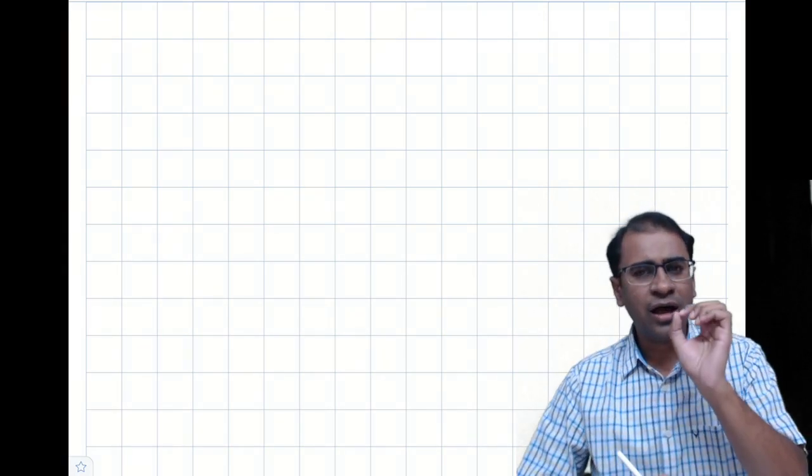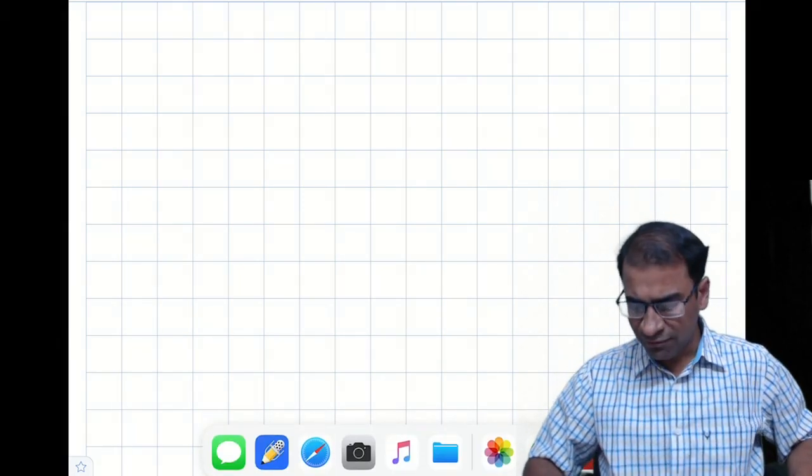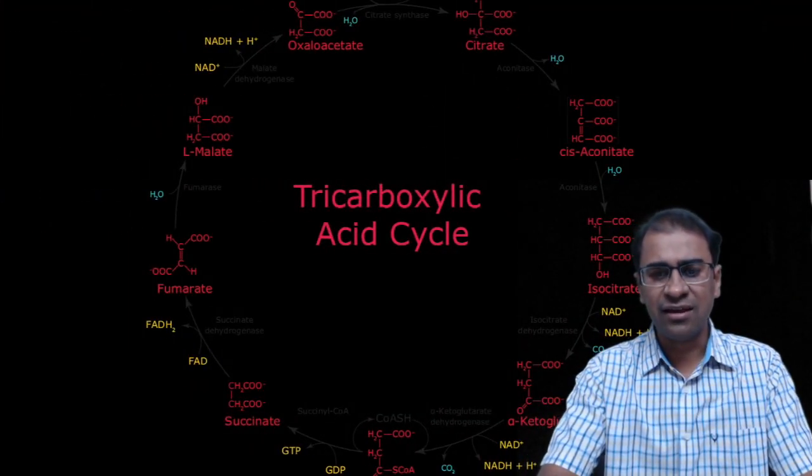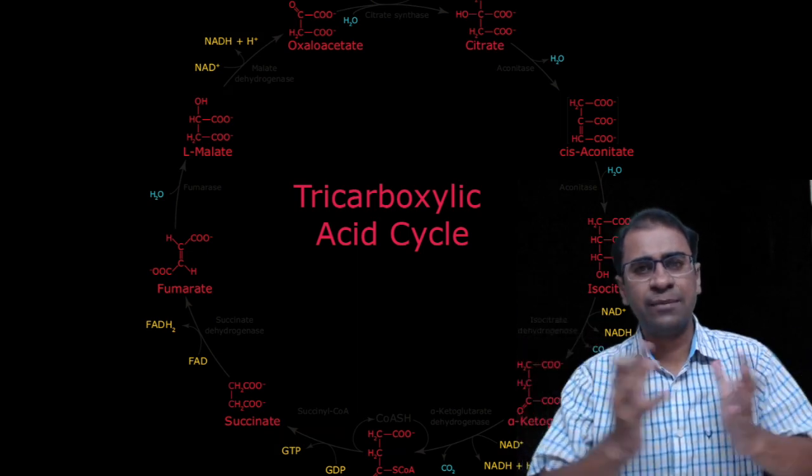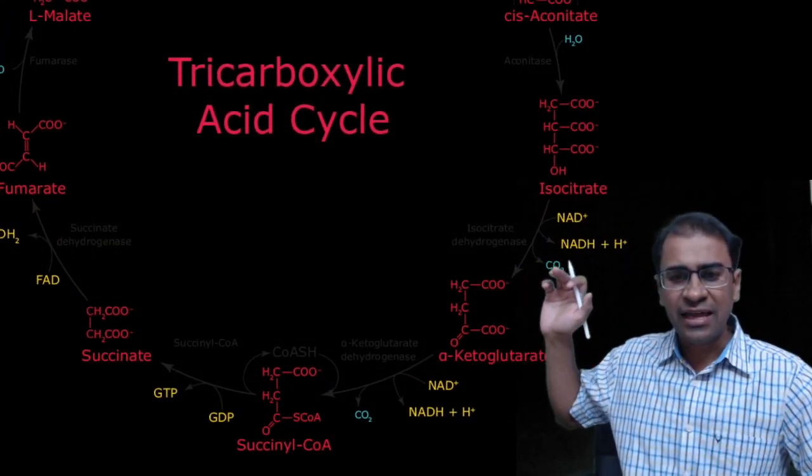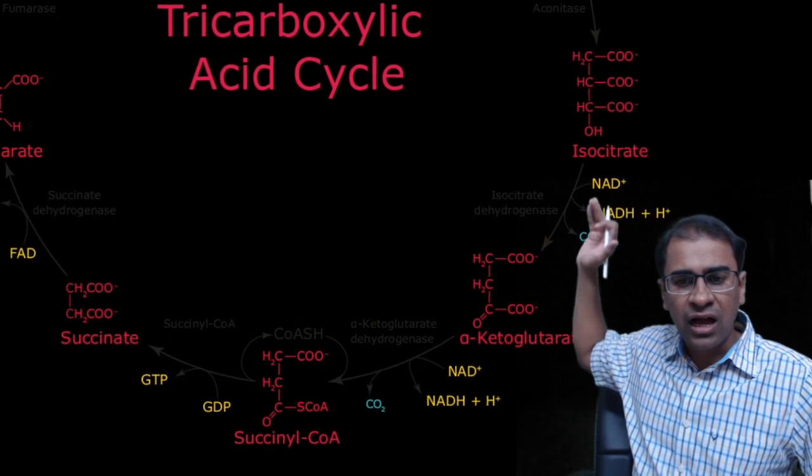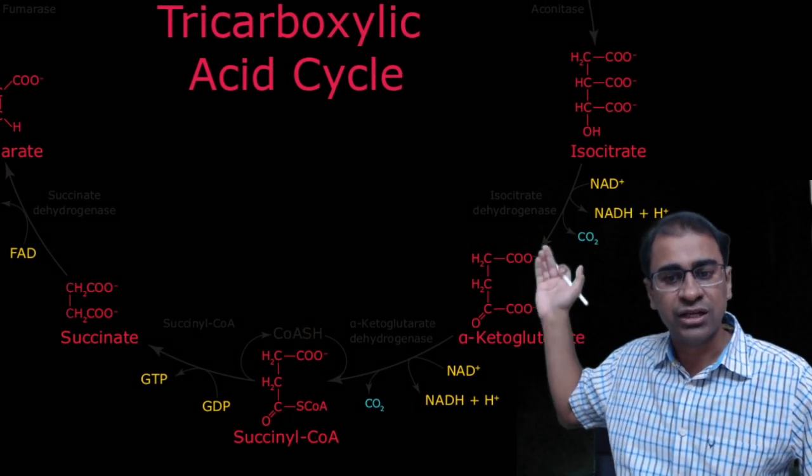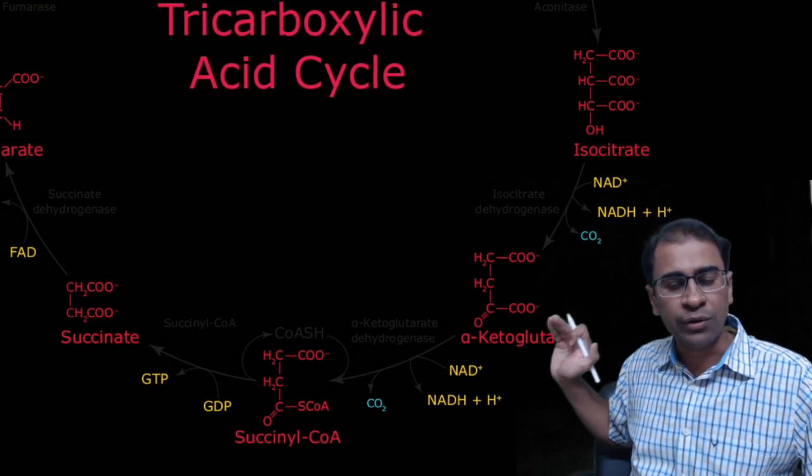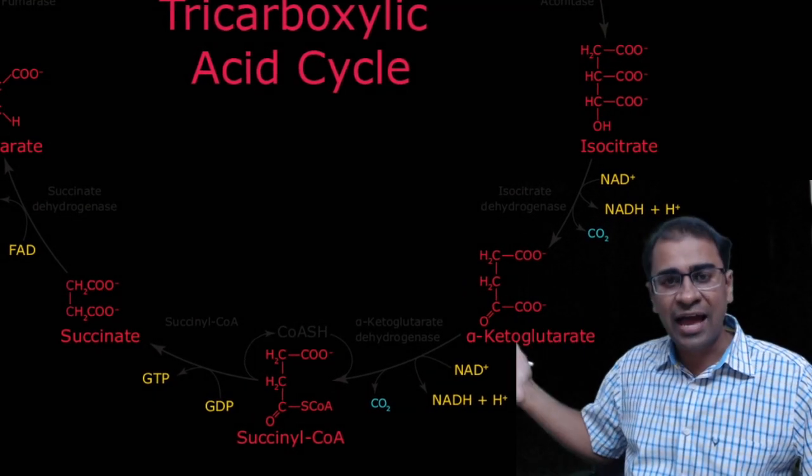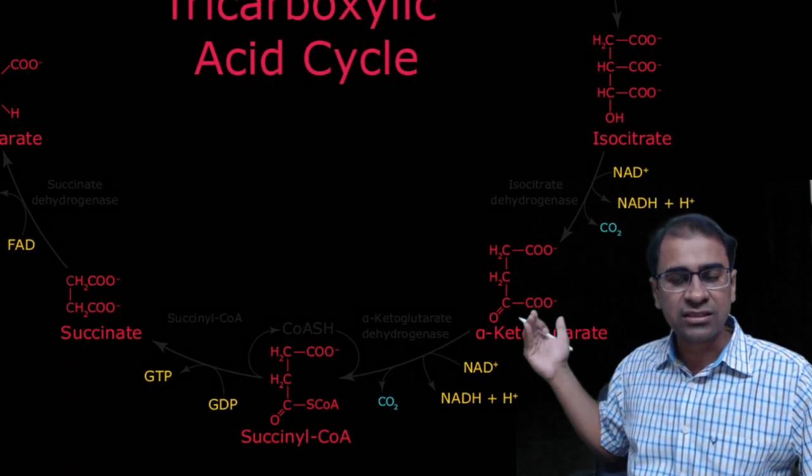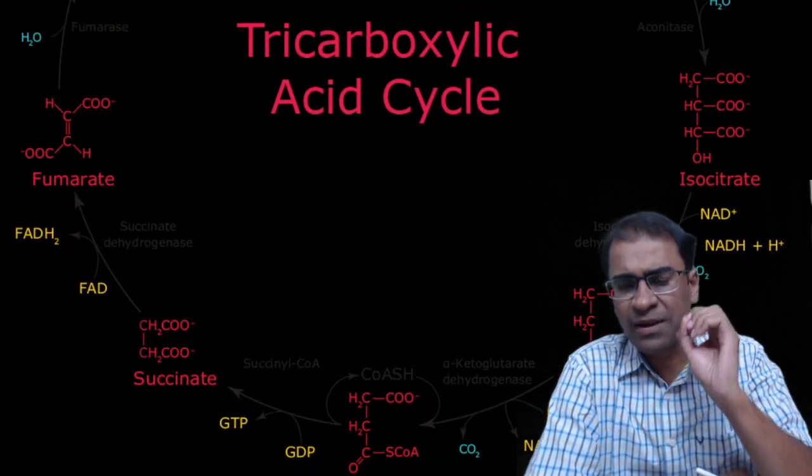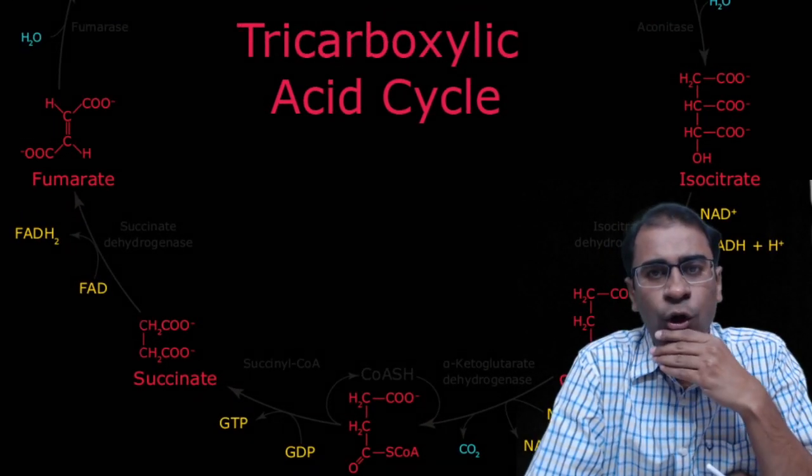You might have heard about isocitrate dehydrogenase and the TCA cycle. The TCA cycle has all these enzymes, including isocitrate, which is acted upon by isocitrate dehydrogenase to make alpha-ketoglutarate, which then acts with alpha-ketoglutarate dehydrogenase to form NADH and convert to succinyl coenzyme A. This is plain biochemistry and Krebs cycle or TCA cycle.